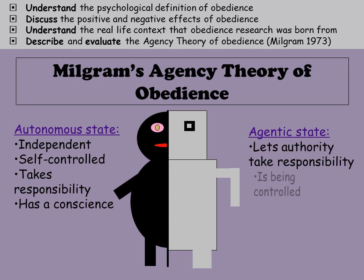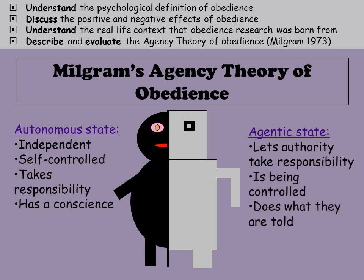The agentic state is quite the opposite. The authority figure takes the responsibility. In an agentic state, someone is being controlled — they are an agent of that authority figure because they're doing what they're told.